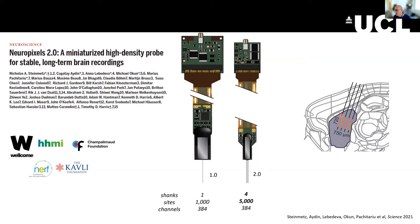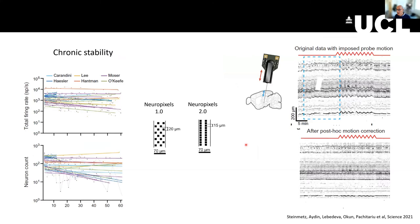Something else that is optimized is the size of the probe — it's all much smaller and lighter, which is ideally suited to chronic recordings. The recordings shown before were acute, meaning one inserts them and takes them out in the same day. With chronic recordings, you can see that over a number of days the number of recorded neurons decreases, but not dramatically so.